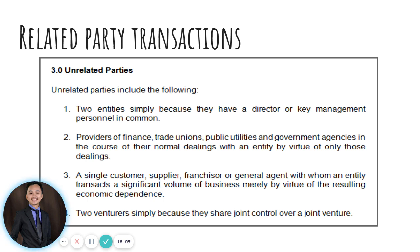Number one: two entities simply because they have a director or key management personnel in common. It doesn't mean that, for example, ABC Company and XYZ Company have an interlocking director — for example, Juan de la Cruz is a director in both ABC Company and XYZ Company — that both entities are already related parties. They are considered as unrelated parties.